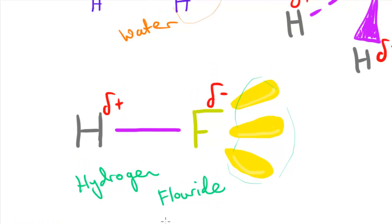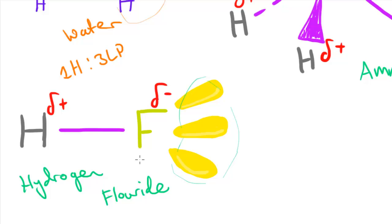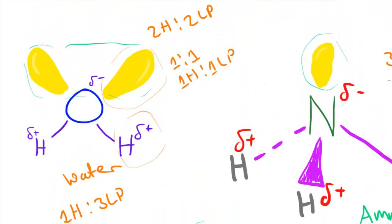For hydrogen fluoride, HF, we have a similar imbalance but flipped: one hydrogen for every three lone pairs. There are plenty of lone pairs but not enough hydrogens to bond to all of them. Each molecule only has one hydrogen, so maybe one lone pair bonds to a hydrogen — it's not a balanced ratio and doesn't maximize hydrogen bonding for a high boiling point.